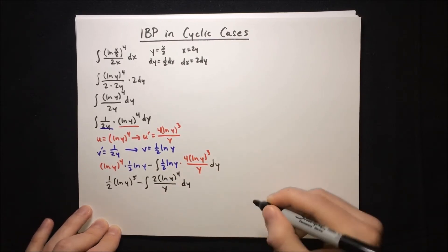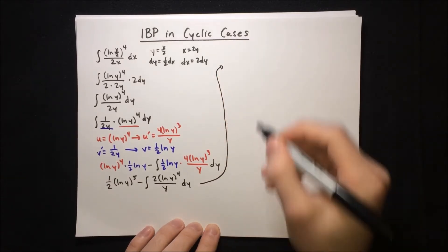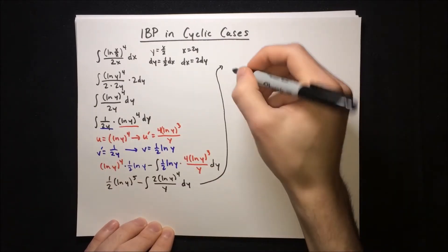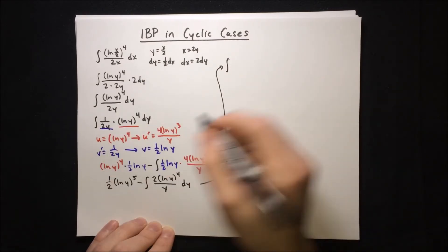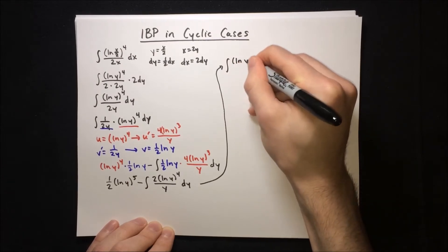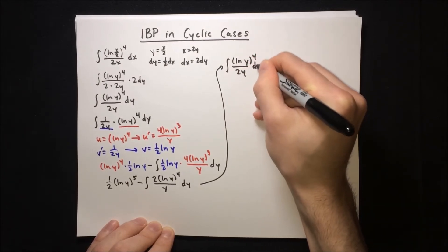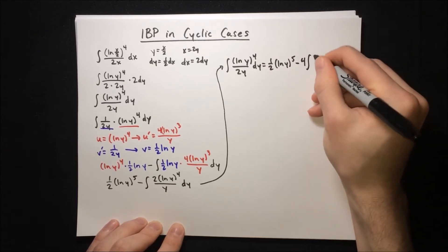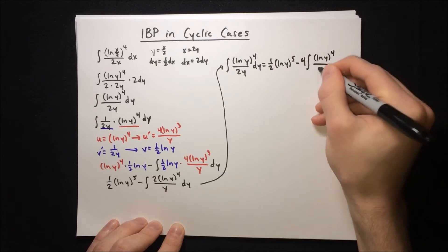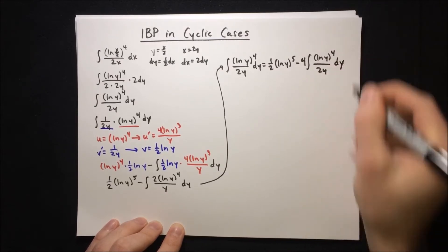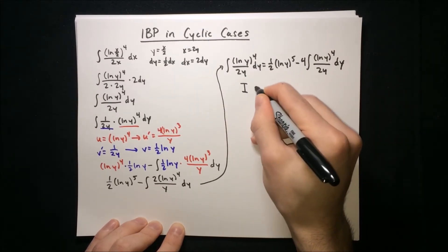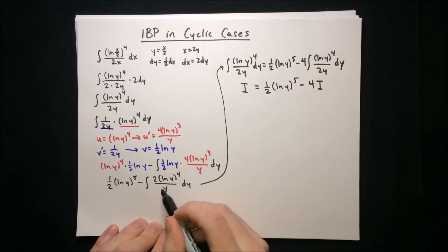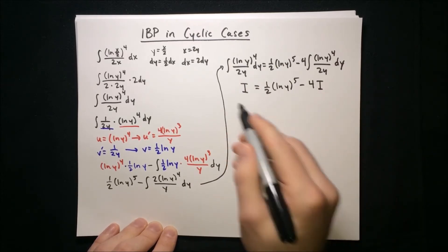Let's move this up for more space and rewrite the integral so it looks more like the original. So we have: the integral of ln(y^4) over 2y dy equals half ln(y^5) minus 4 times the integral of ln(y^4) over 2y dy. We recognize the original integral appears on both sides, so let's call it i to ease notation. So i equals half ln(y^5) minus 4i.